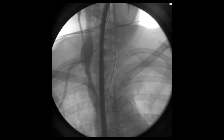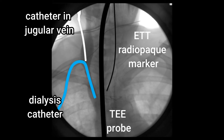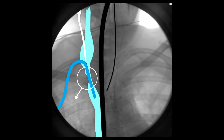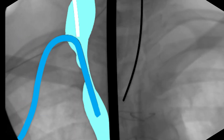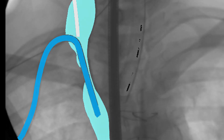The catheter was advanced into the jugular vein enough to perform a venogram. In the venogram, you can note a dilated mid portion of the right jugular vein. Also visible is the dialysis catheter, with a very narrow distal jugular vein noted by the white circle. In the magnified view, you can see how the distal jugular vein was the size of the dialysis catheter.